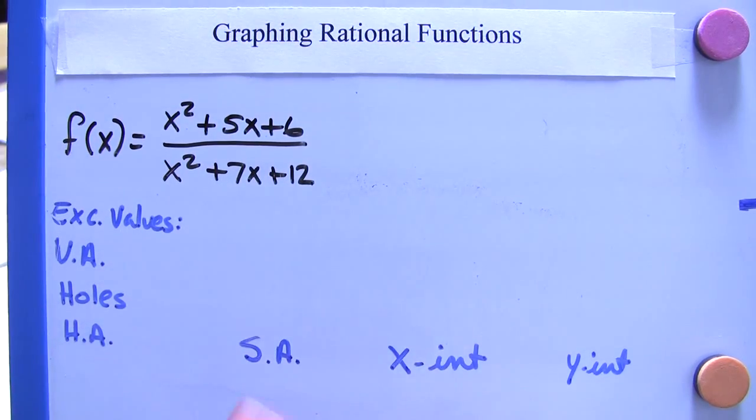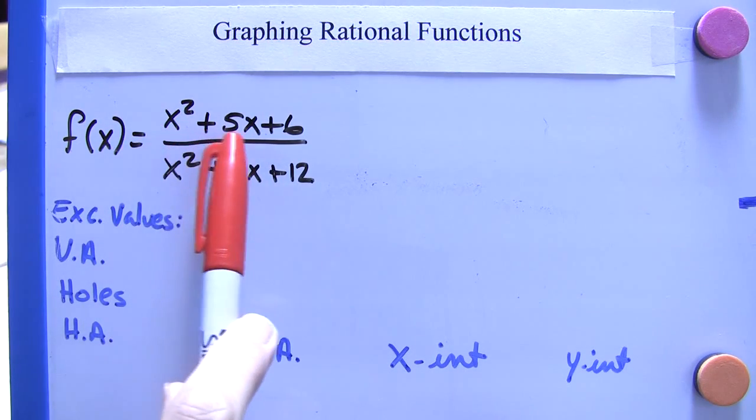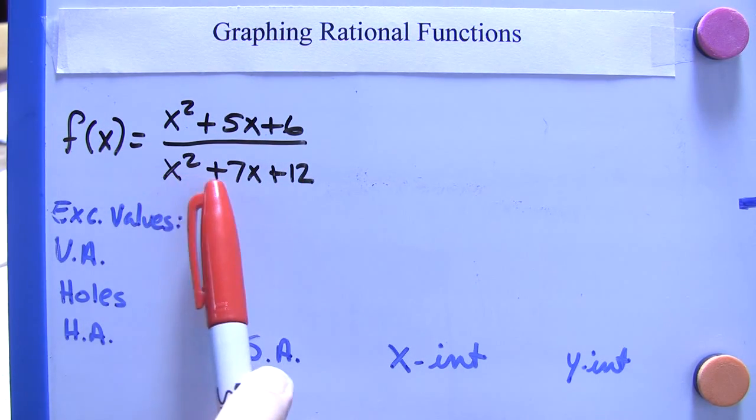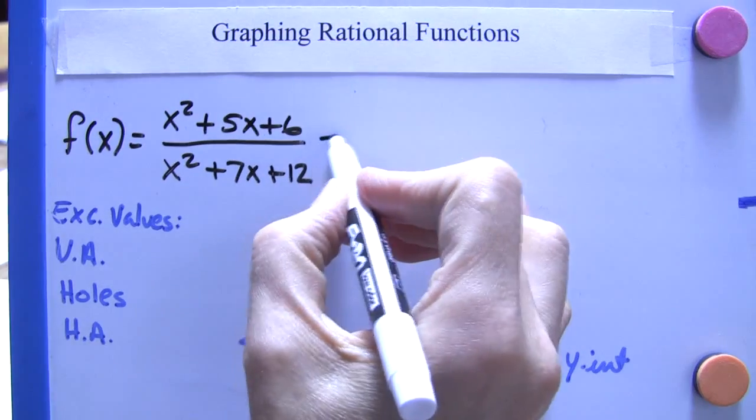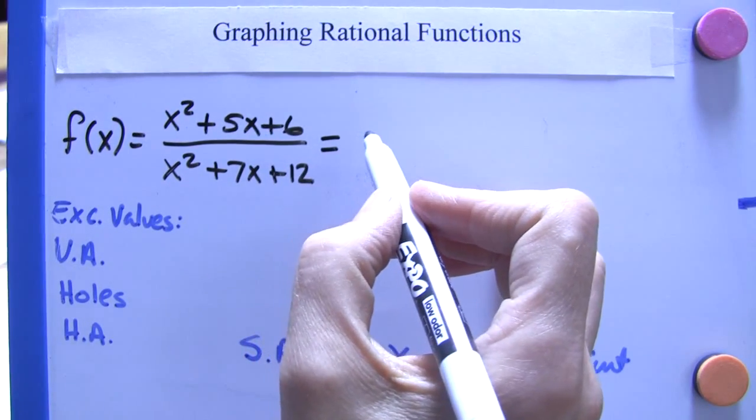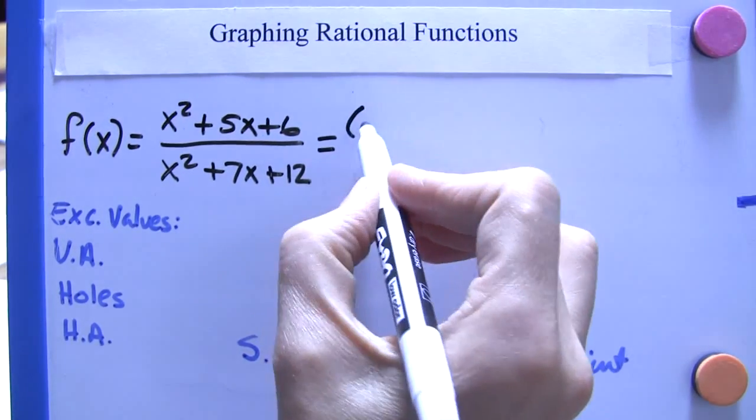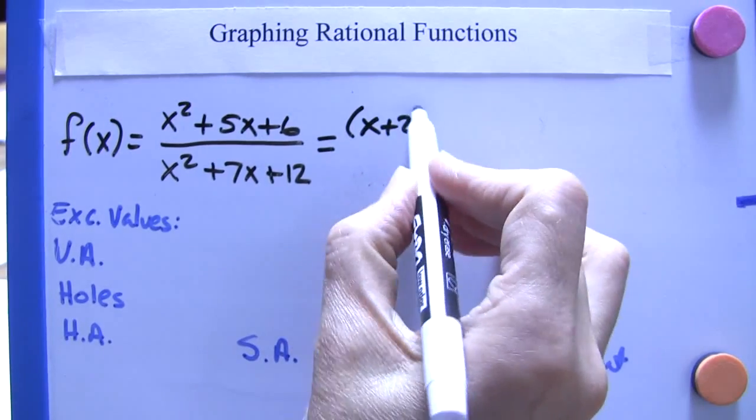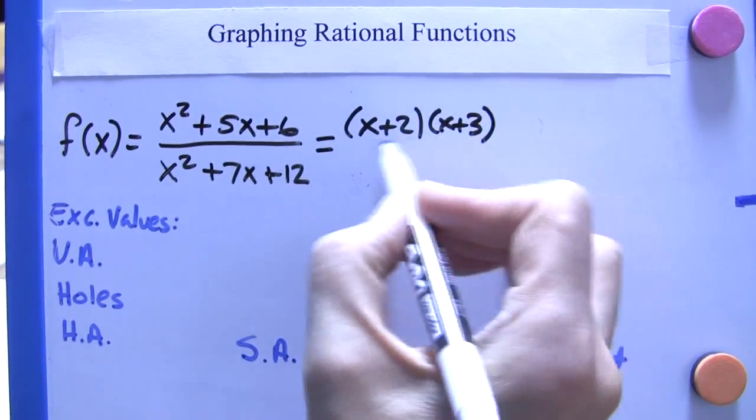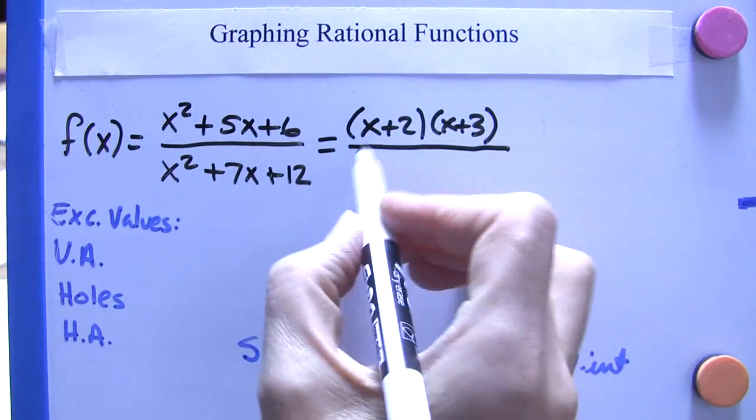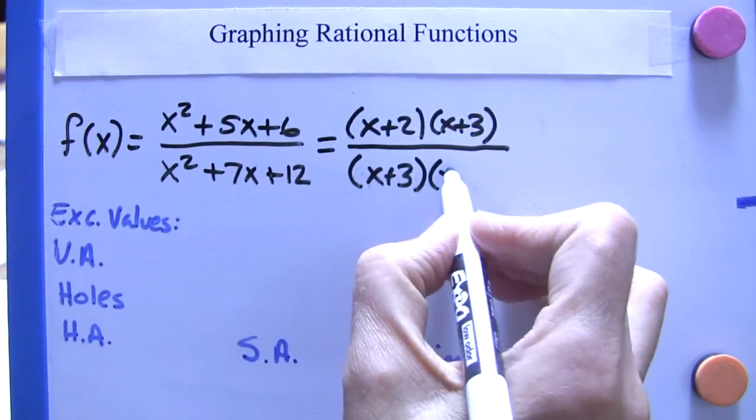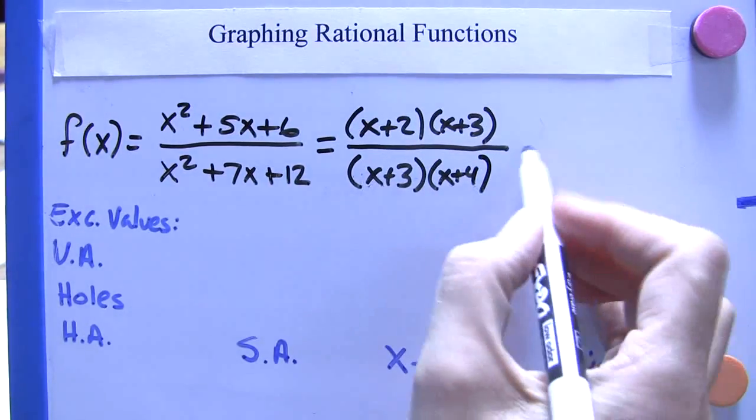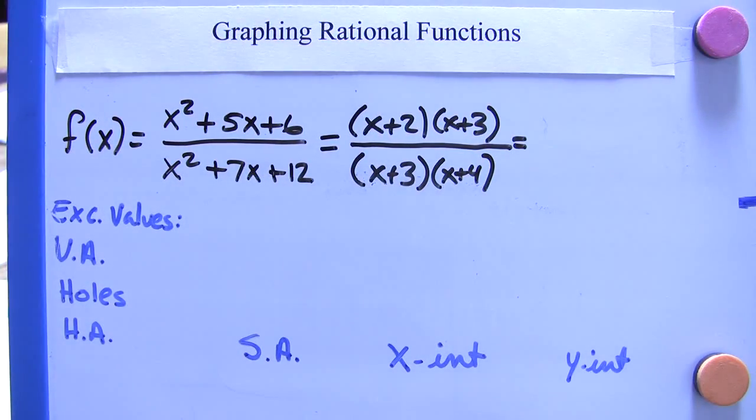So let's take this rational expression here x squared plus 5x plus 6 over x squared plus 7x plus 12. And the first thing we're going to do is simplify this. So if I factor this out, I'm going to get x plus 2 times x plus 3 gives us the numerator.